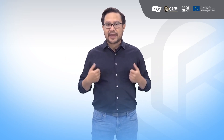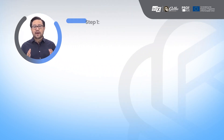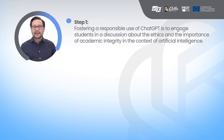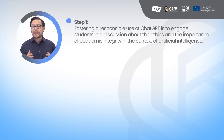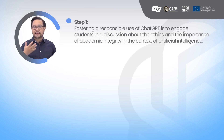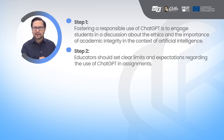Step one: fostering responsible use of ChatGPT is to engage students in a discussion about ethics and the importance of academic integrity in the context of artificial intelligence. Educators can reflect on this topic in class, suggesting debates on how and when it is appropriate to use this type of technology, as well as the different possibilities and consequences of its misuse.